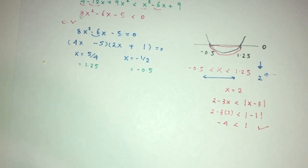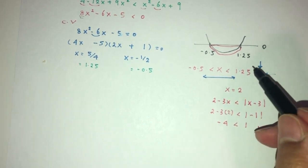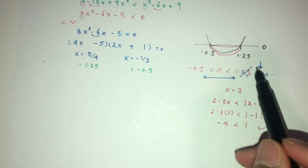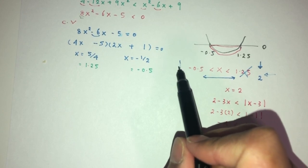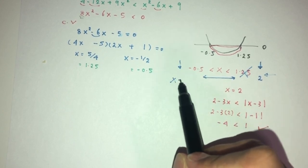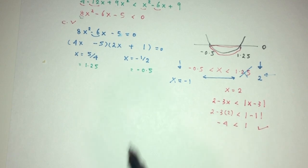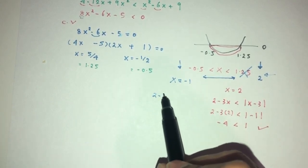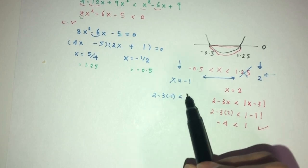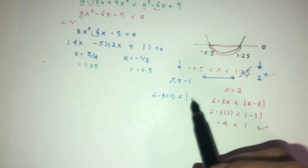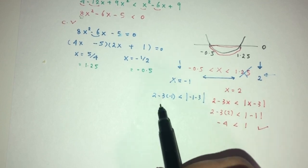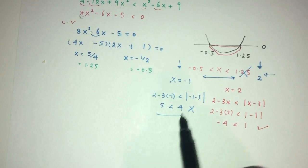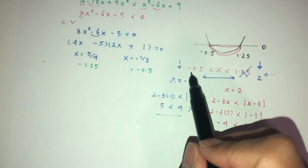It means that my equation works, so this is not the hard limit — I can go past that. In this case, I will not consider this one as a boundary. Now, how about this one? Let me choose x equal to minus 1 to see if that works or not. Replace: that will be 2 minus 3 times minus 1, less than minus 1 minus 3. That will be 5 less than 4, which is not true. So it will not work — anything before this will not work. So this is my hard limit.